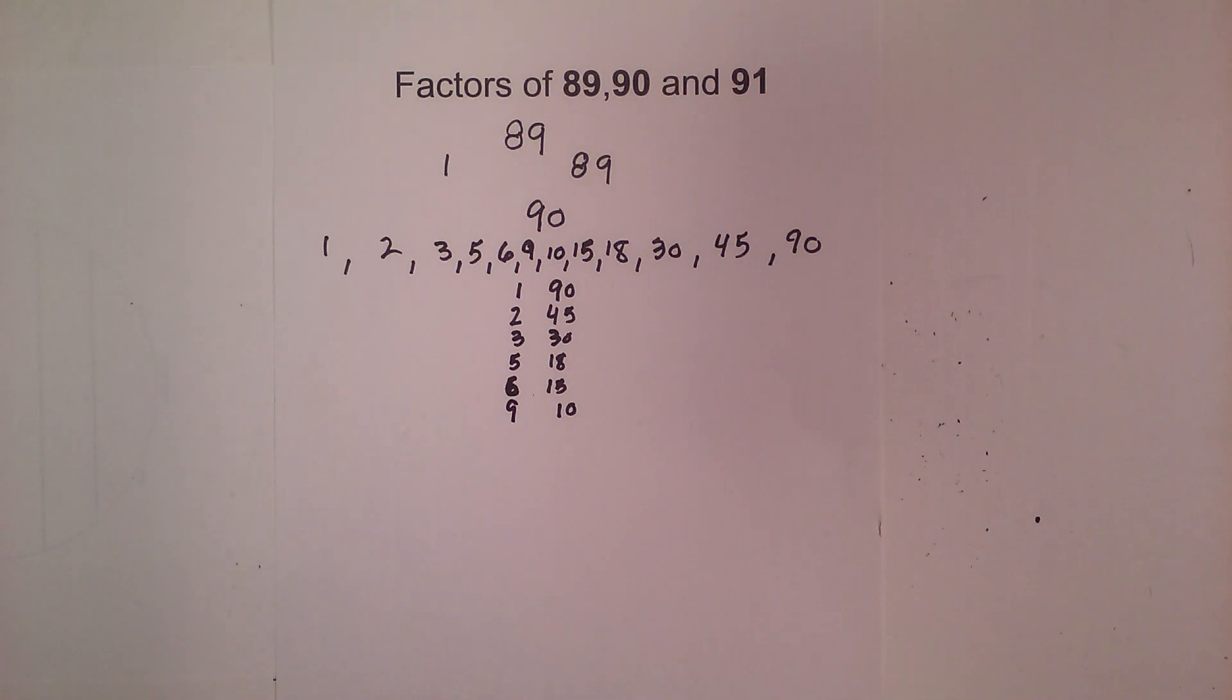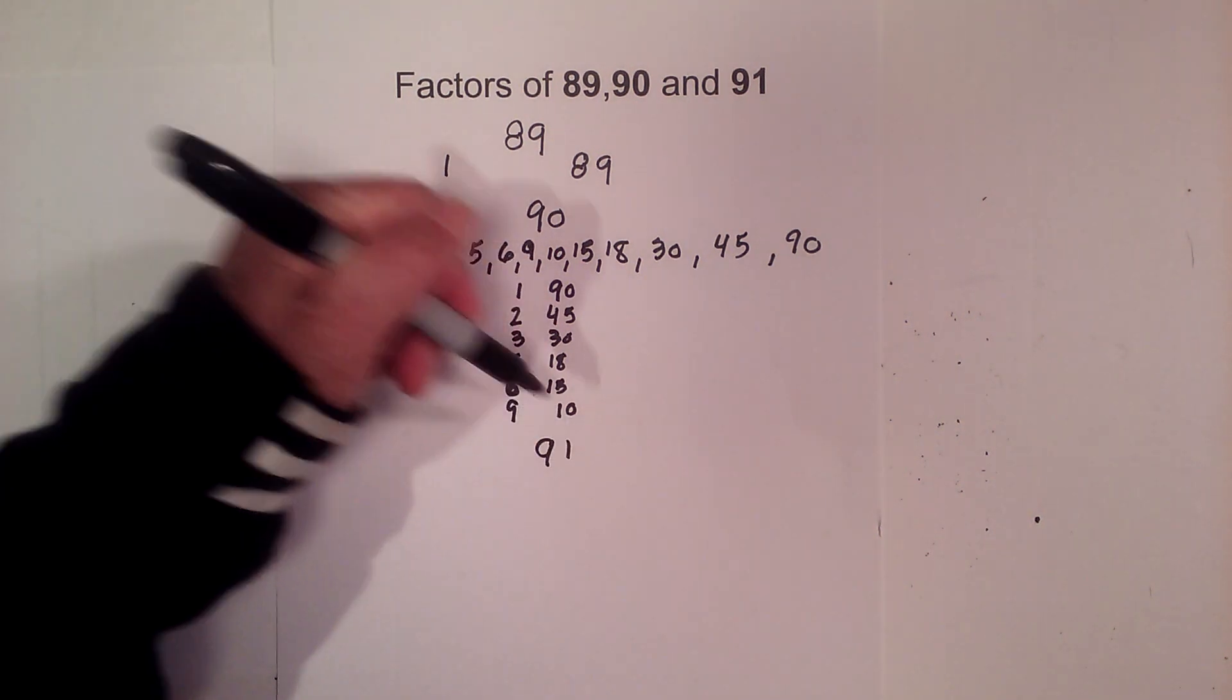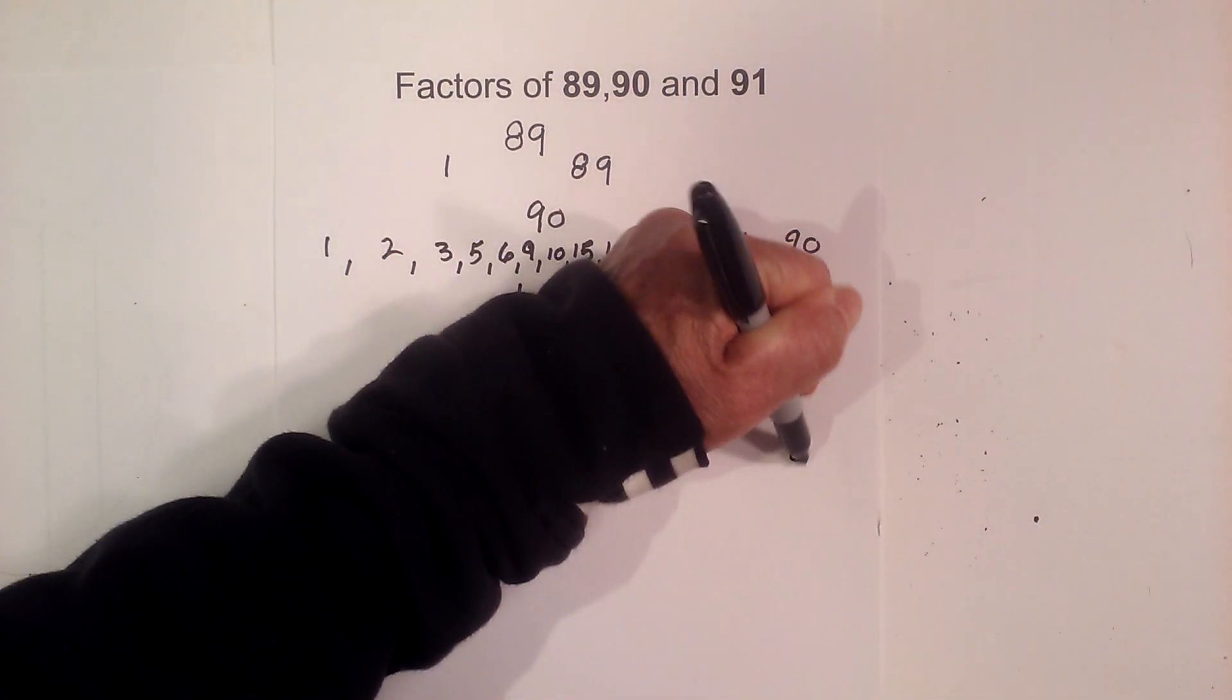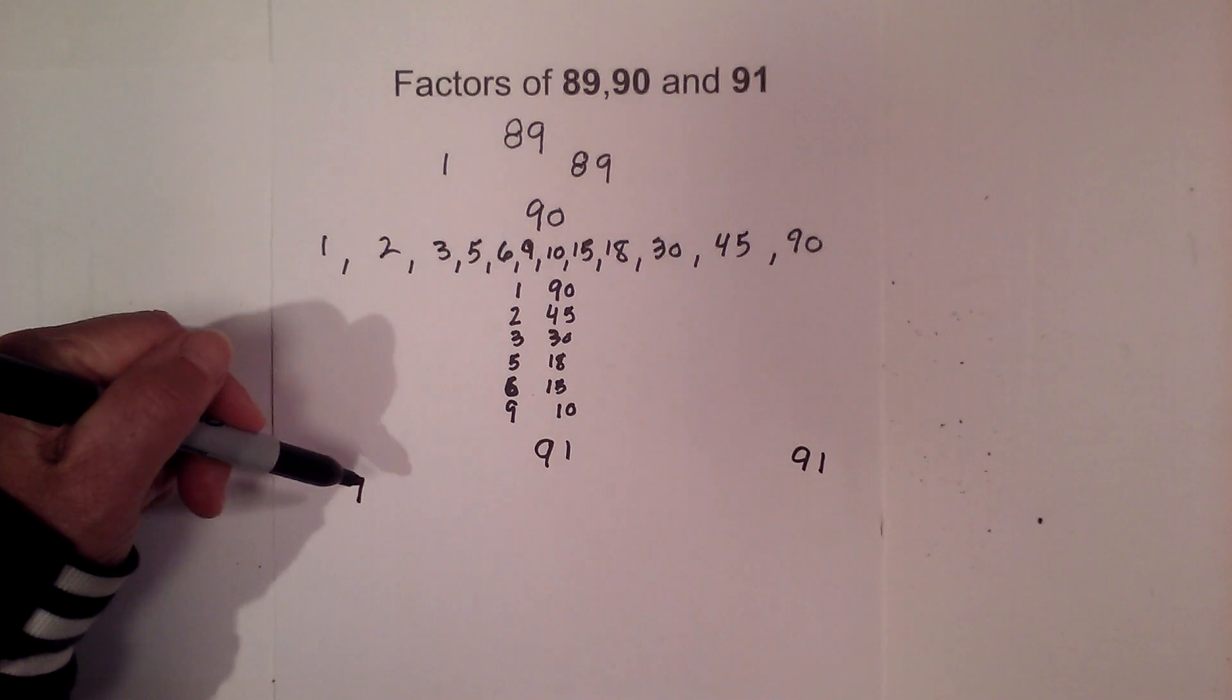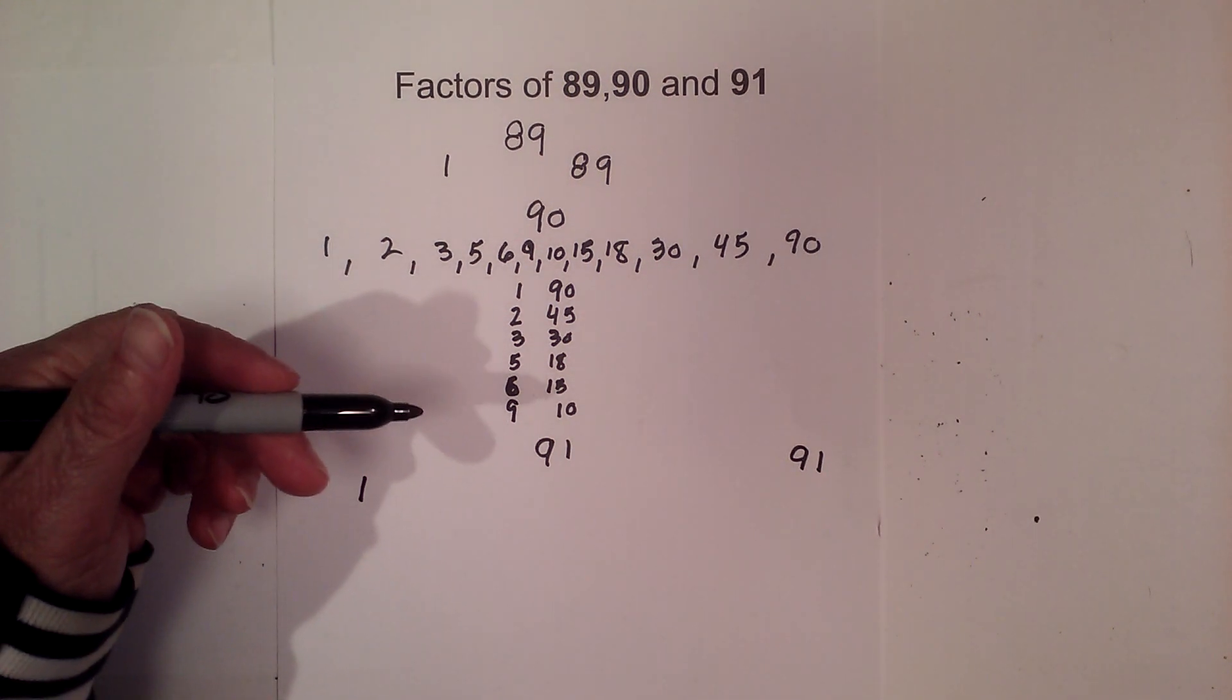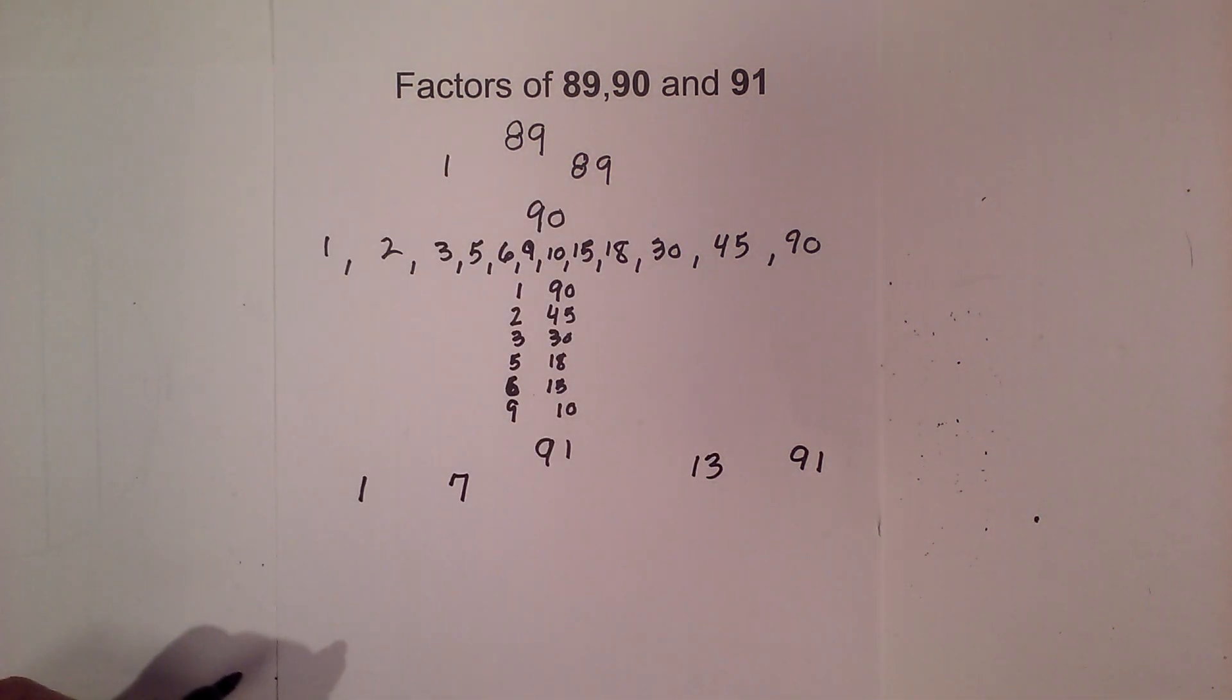Now, let's look at 91. Again, I will start with 1 times 91, and then 2, 3, 4, 5, 6, neither of them will go into 91. But 7 times 13 goes into 91.